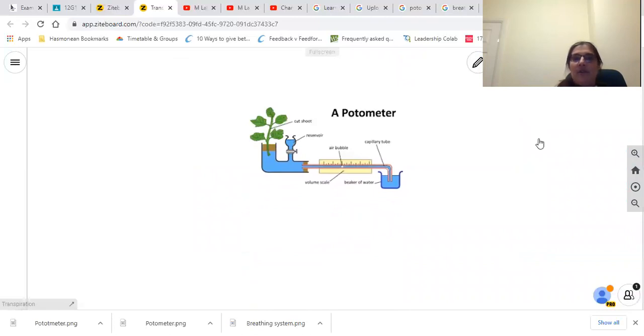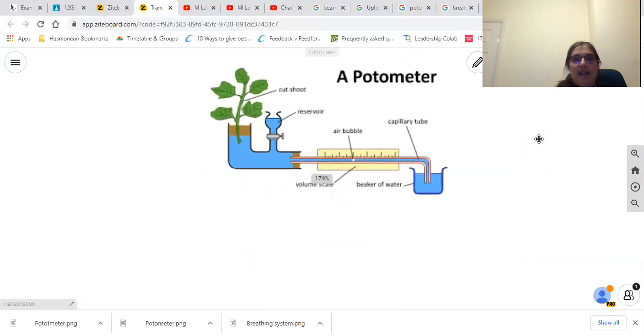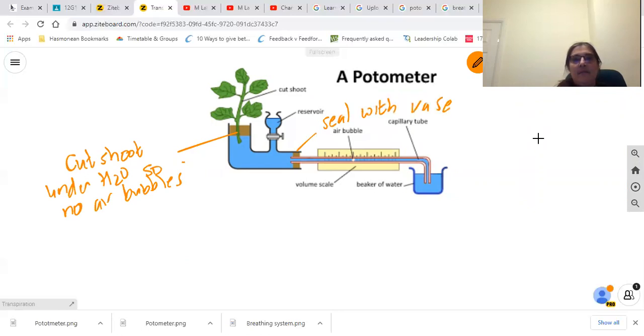You should have come across this before. It's used to measure water uptake. You take a shoot, you must cut the shoot under water so you don't get any air bubbles. You assemble the whole apparatus underwater as much as possible. You need to seal it with Vaseline to prevent leaks. Then you put in an air bubble and you watch how far it moves in a given amount of time. For example, I might see that my air bubble starts there and it manages to move 20 millimeters in 10 minutes.